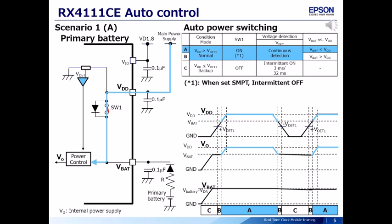Scenario 1: The condition is when VDD is more than VDET1. VDET1 is the detection voltage. We call this normal mode. In this case, switch 1 is on, and VDD is more than VBAT.